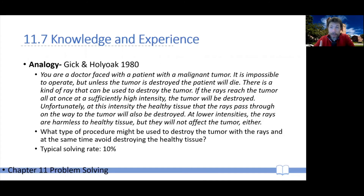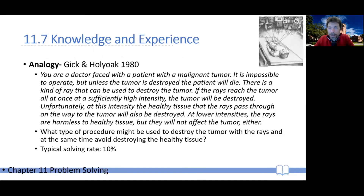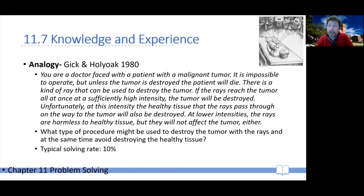If you don't want to know the solution right away, pause the video. The classic solution is to take multiple rays and scatter them so they are all focused on where the tumor is, but the rays only converge at the site of the tumor. This way, each individual ray is not strong enough to harm healthy tissue, and they all converge to give maximum power where the tumor is. This solution was found by just about 10% of participants.